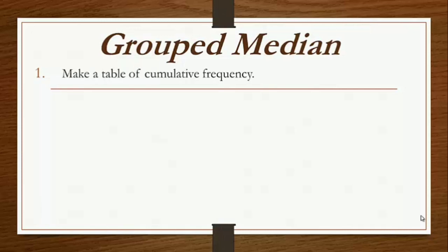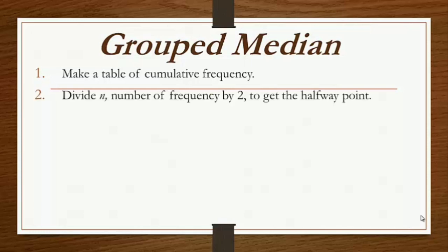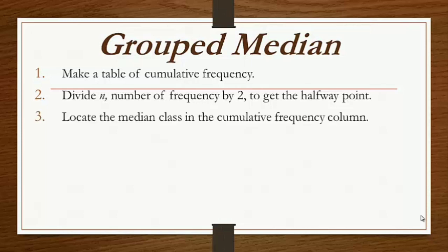Let's talk about grouped median. There are steps to follow to solve for the median of grouped data. First, make a table of cumulative frequency. Second, divide n by 2 to get the halfway point. Third, locate the median class in the cumulative frequency column. Fourth, substitute in the formula.